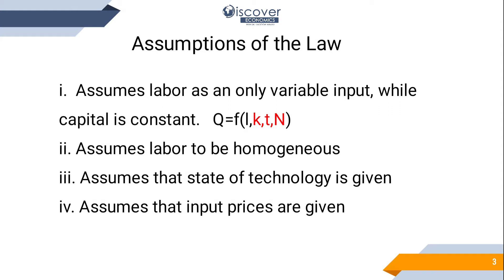We are not going to change the technology. If technology is changed then this law will not work, because higher advanced technology may increase productivity instead of decreasing it. So we assume technological change will not be done. The fourth assumption is that input prices are given and will remain the same, because if input prices decrease the producer would deploy more inputs and get more output.